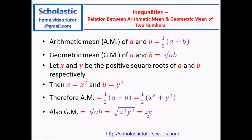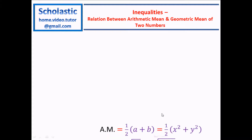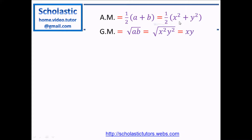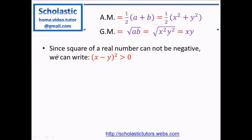x and y are the positive square roots of the given two numbers. What we got is that arithmetic mean equals half of (x squared + y squared) and geometric mean is xy. Let's take an expression here: since the square of a real number cannot be negative, we can write (x minus y) squared is greater than or equal to zero. x and y can be any numbers — irrespective of that, if you square any number, it is greater than or equal to zero. The equal sign happens when x and y are equal.